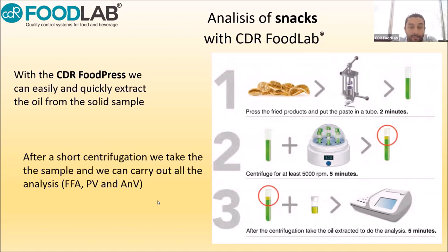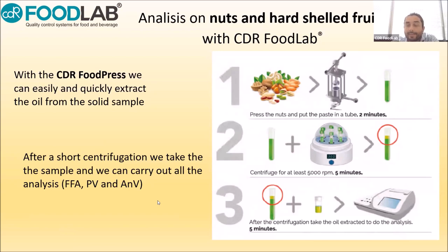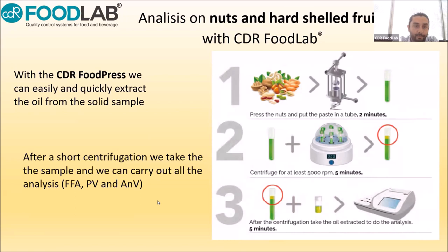With one extraction you can run three analyses on the same extraction — giving you important information about product oxidation in terms of peroxides, anisidine, and free fatty acid. For nuts, the situation is exactly the same: collect the sample, use the food press to squeeze out the oil, centrifuge the sample, and collect a small amount of clear oil on top of the cuvette for analysis — just like having a normal oil. You can then run free fatty acid, peroxide, and anisidine.